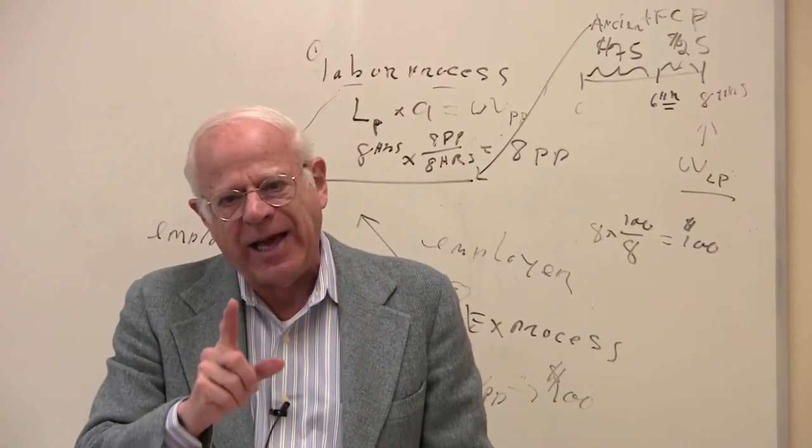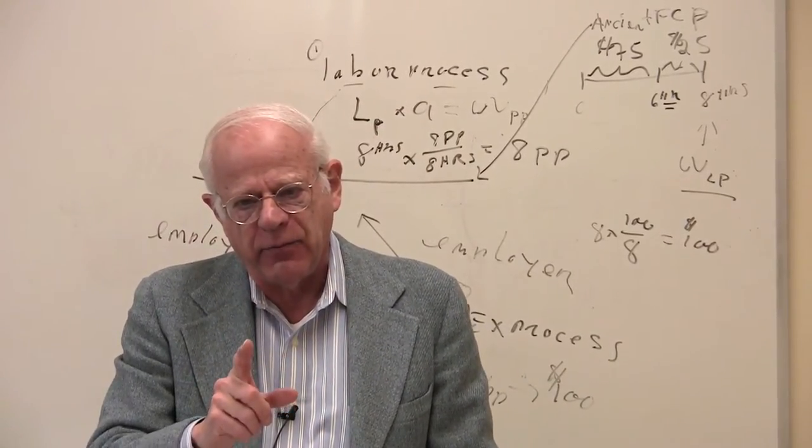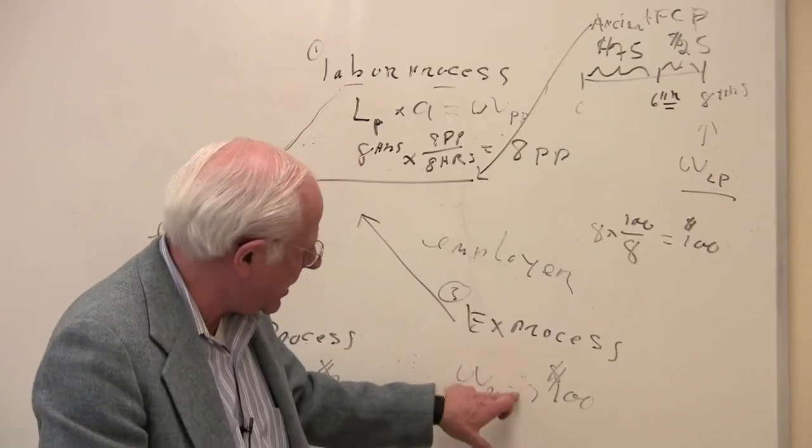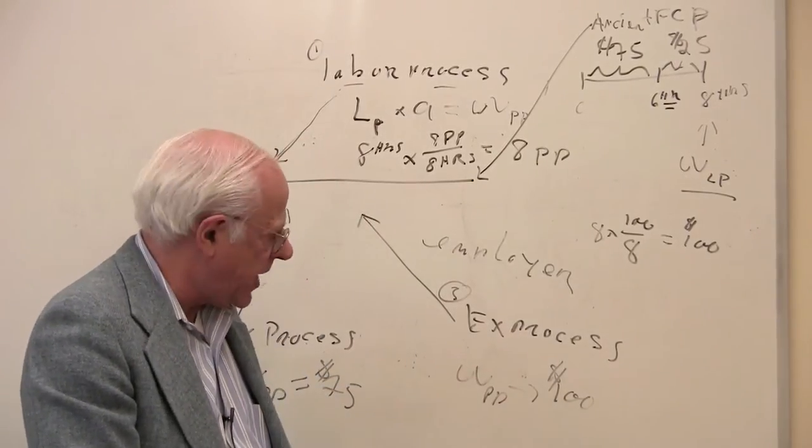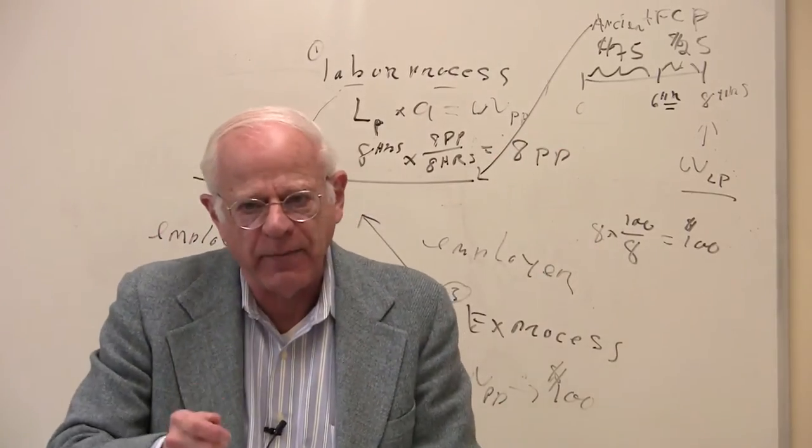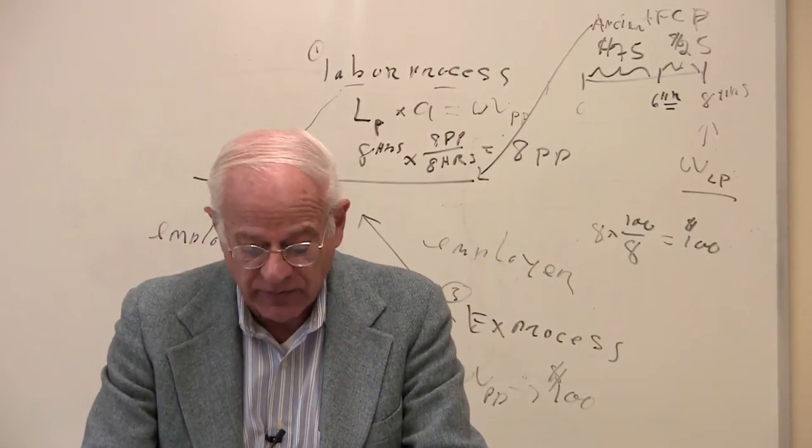You can't deduce the kind of commodity present in society from just looking at the exchange process itself. You have to connect that exchange process to the class process. Why? Because the class process is Marx's point of entry.